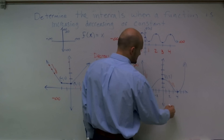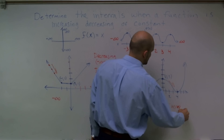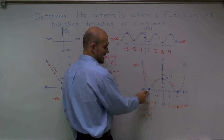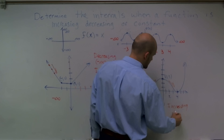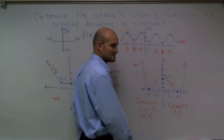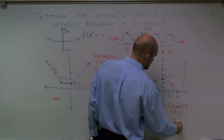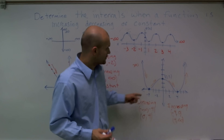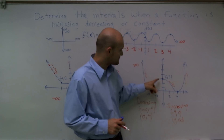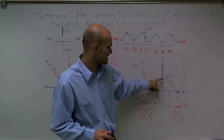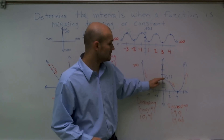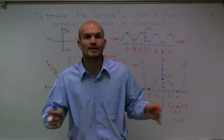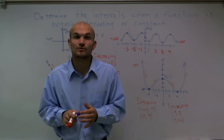Now let's look at where the graph is increasing. The graph is increasing from negative 4 to 0, and also increasing from 4 to infinity. There is not a point where the graph is actually constant. A lot of students will look at this and say it looks very close to being constant right at 0, but even though it's very slowly increasing right at 0, it then starts decreasing. So there is no interval where the graph is going to be constant.